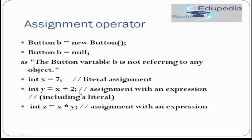In the next example, the assignment is done with an operation. We create a variable Y of type int and assign it using an expression: X plus 2. The value of X is 7, so Y will be 9 — assigned using an expression. It is perfectly acceptable in Java to use an expression with the assignment operator. Similarly, the example below shows an expression with a multiplication operator, calculating the value first and then assigning it.